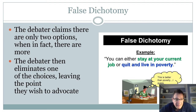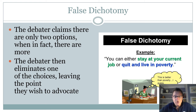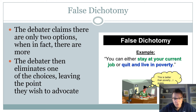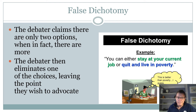False dichotomy is when you claim there are only two choices when there are actually quite a few more. For example: 'You can either stay at your current job or quit and live in poverty.' Well, maybe you get a different job. Maybe you have other options at your disposal. It's giving people the idea that they have fewer choices than they actually have.